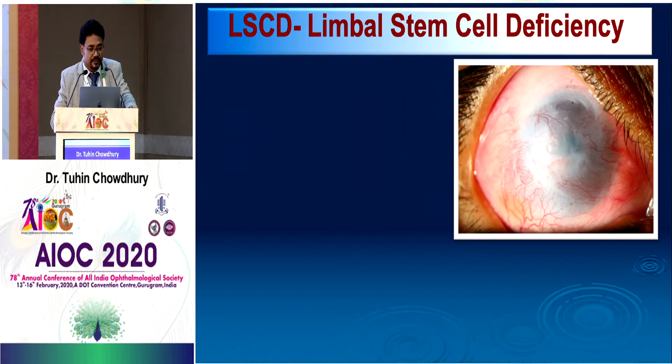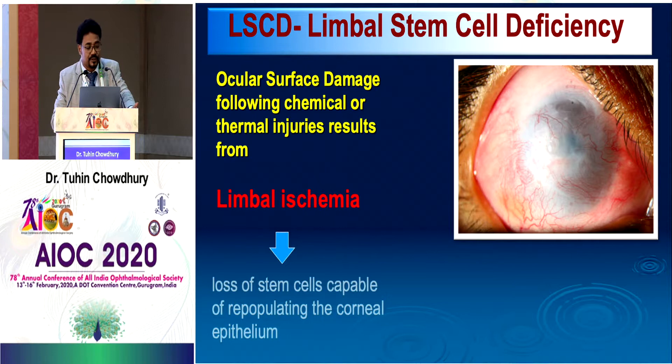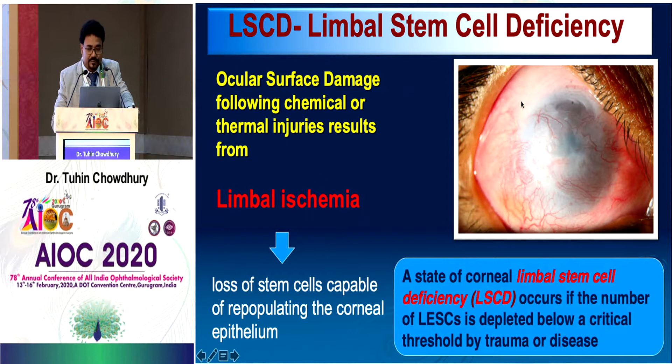I will be talking for the next seven minutes on SLATE. In limbal stem cell deficiency, ocular surface damage following thermal or chemical injuries results from limbal ischemia and subsequent loss of stem cells which are capable of repopulating the corneal epithelium. When these stem cells are absent from the limbal epithelium, a state of corneal limbal stem cell deficiency occurs if the number of limbal epithelial stem cells is depleted below a critical threshold level by trauma or disease.